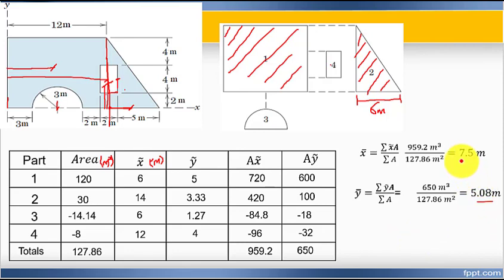This is the final answer. The composite shape centroid is at 7.5 meters in the x-direction and 5.08 meters in the y-direction. You need to practice similar problems from your textbook. In the exam, you might encounter truss, moment of inertia, or centroid problems. Thank you.